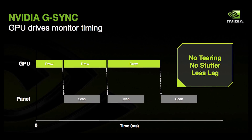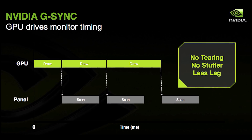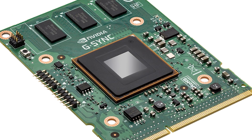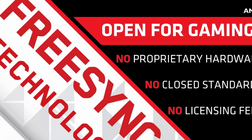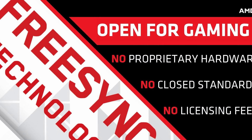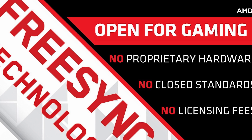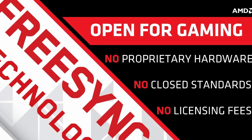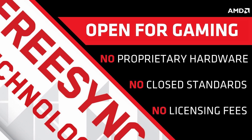FreeSync requires a few modifications to the display's internal controllers and also a compatible graphics processor to function. NVIDIA's competing technology that achieved similar results, G-Sync, uses an expensive proprietary controller module. FreeSync is an open standard — in fact it was adopted as the official VESA Adaptive Sync standard — so any display controller manufacturer can implement the technology. The core technology of FreeSync is just this one feature: Adaptive Sync.